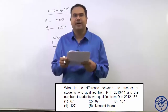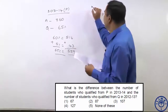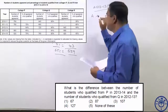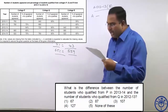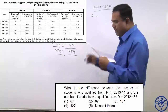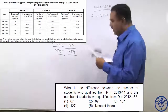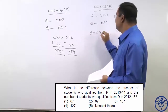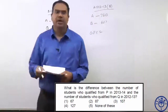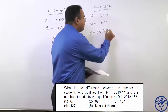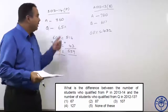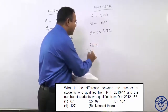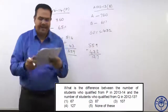Now let us look at the number of students who qualified from Q in 2012-13. How many students appeared? From the table, 2012-13 Q, the number of students appeared is 720. The number of students qualified is 60 percent. How much is 60 percent? 10 percent is 72; into 6 times, that is 432. The question is: what is the difference between number of students qualified from P and from Q? That is 559 minus 432 — the difference is 127. It is present in option 4.